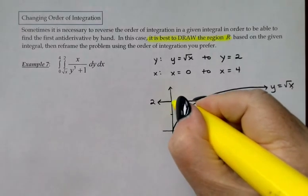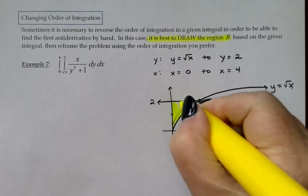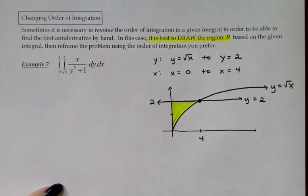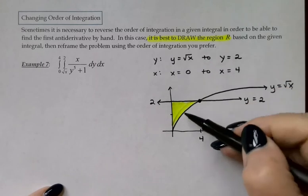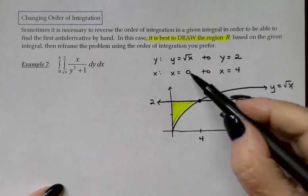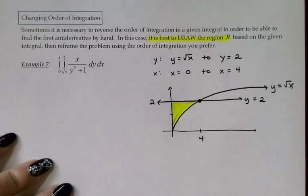So, here is my region that I'm working with. Double check. Bottom is square root of x curve. Top is y equals 2. That works. And left to right is 0 to 4. Alright.